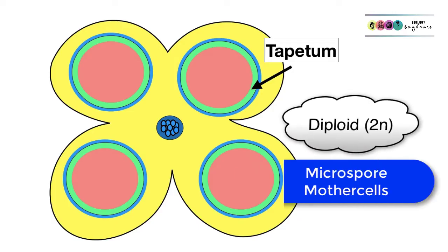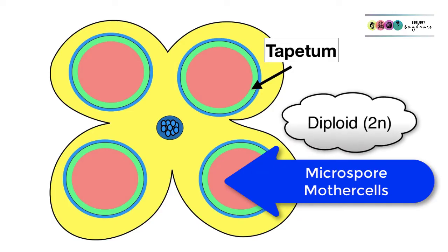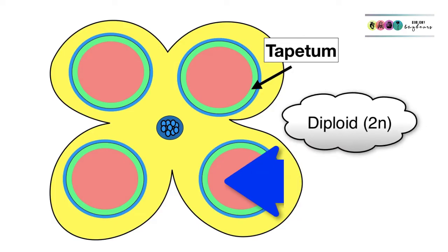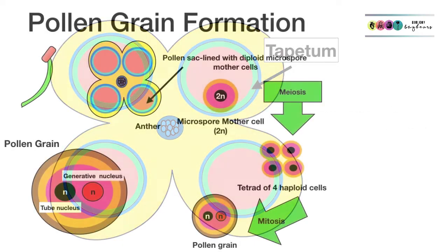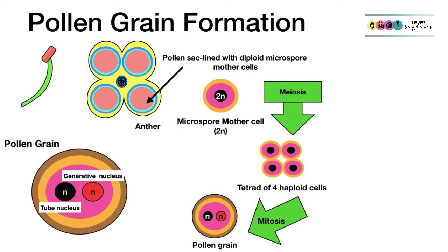Within each of these pollen sacs are these diploid microspore mother cells and it's from these that the pollen grains will develop. So let's go through the formation of one pollen grain. So inside these pollen sacs are these diploid microspore mother cells. Let's talk about one.